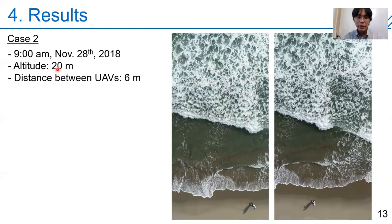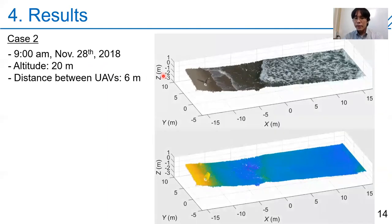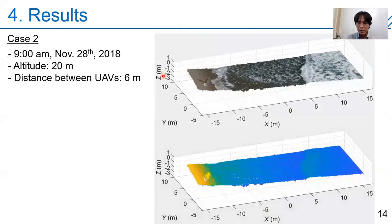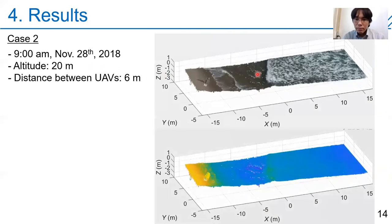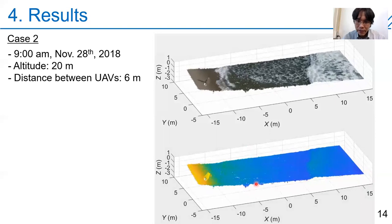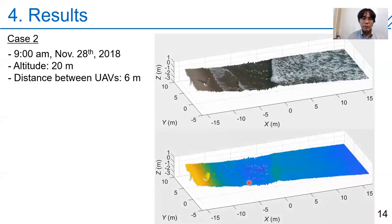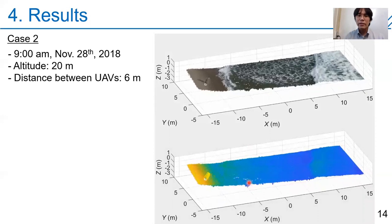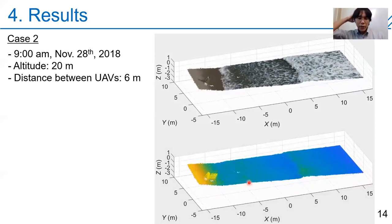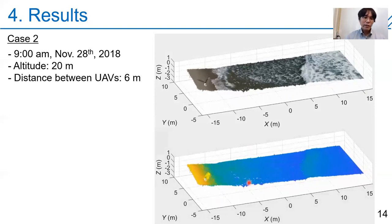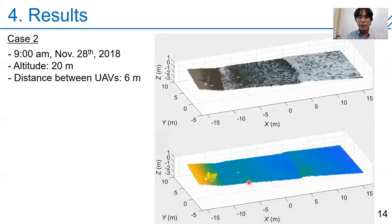This is the case with the lower altitude. In this case also, the surface forms were successfully reconstructed and we can observe wave propagation. However, sometimes we have noisy results, which is simply due to less texture on the surface. For applying this technique in real monitoring, we should find a method to automatically remove these errors. Nevertheless, I think I could show the possibility and applicability of stereo image analysis for 3D wave monitoring by UAVs in the surf zone.